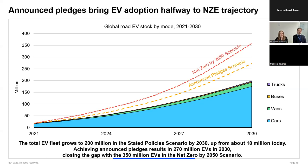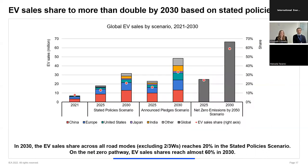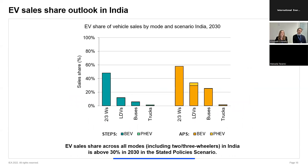This benchmarking against the NZE helps show that while announced pledges get us closer on track to net zero, we'll need even more ambitious policies to be actually on track. Our scenario projections rely on the recent market and policy trends. Over time, it's interesting to see how the gap between stated policies, announced pledges, and the net zero trajectory will close or not close. We also look at EV sales and sales shares into the future for all road vehicles, and we show country or region level results by road segment for select countries in the Stated Policy and Announced Pledges scenarios.